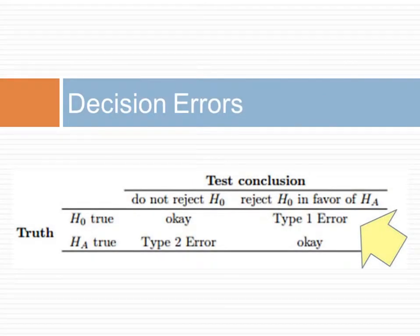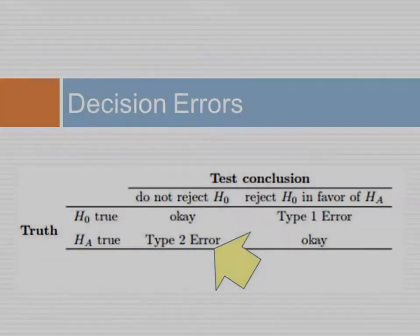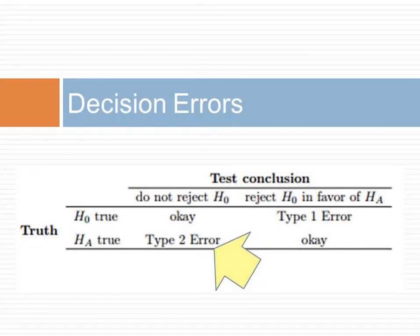There are four possible scenarios in a hypothesis test, which are summarized in this table. A type 1 error is rejecting the null hypothesis when the null hypothesis is actually true. A type 2 error is failing to reject the null hypothesis when the alternative is actually true.